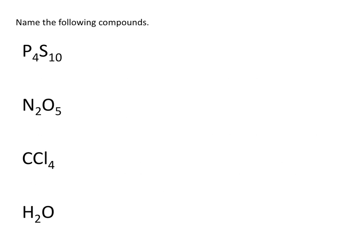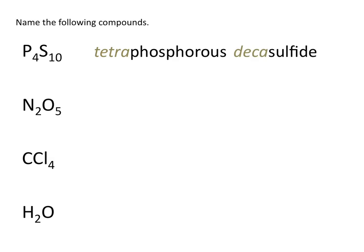Let's look at some examples and name the following compounds. P4 means tetraphosphorus, S10 means deca, and then we change the ending of the element name to ide. So P4S10 is tetraphosphorus decasulfide.